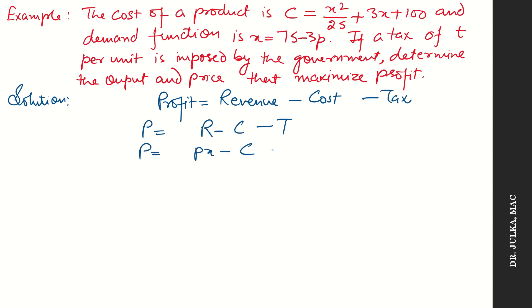R equals to p into x, and the total tax is t into x. Put p equals to 75 minus x upon 3, and the cost x squared by 25 plus 3x plus 100. After simplification we'll get the profit function.